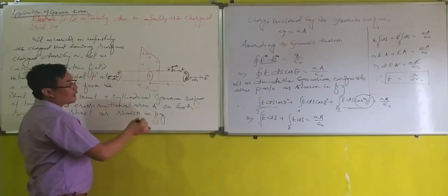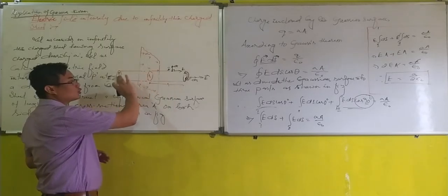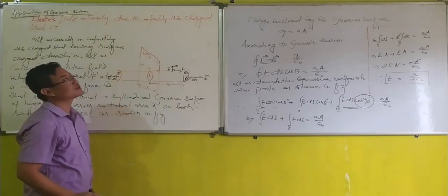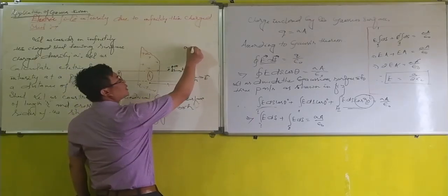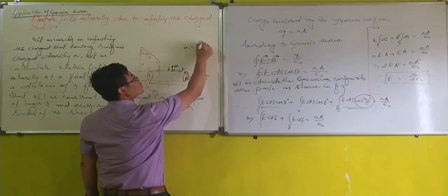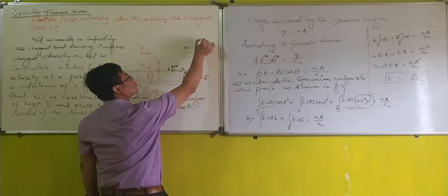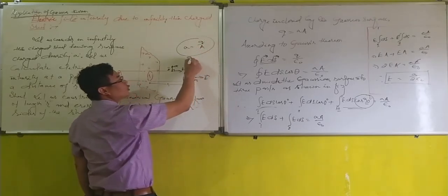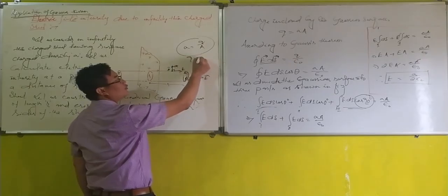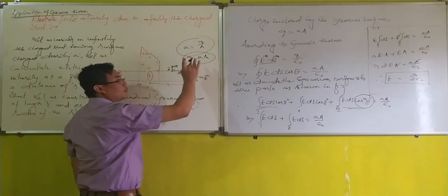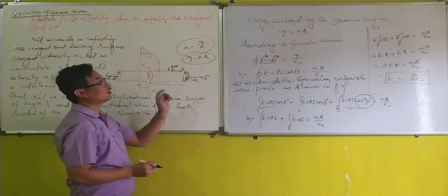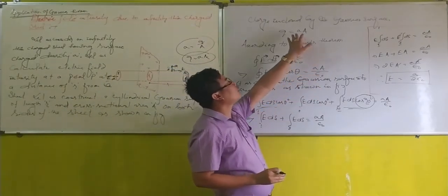At first, we have to find the electric charge enclosed by this Gaussian surface. We have surface charge density sigma equals charge divided by area. From this relation, we can find the charge is Q equals sigma A. This is the charge enclosed by the Gaussian surface. I have already written down here.